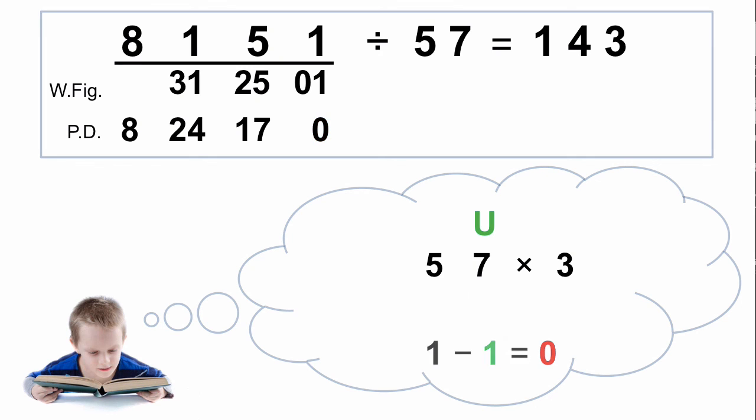And what this means is that our answer of 8151 divided by 57 equals 143 with no remainder. The final partial dividend is our remainder if there is one. In this case it's 0, so we have no remainder.